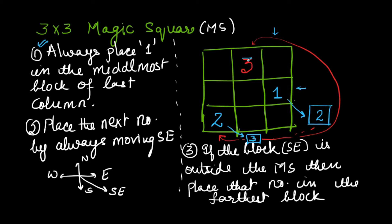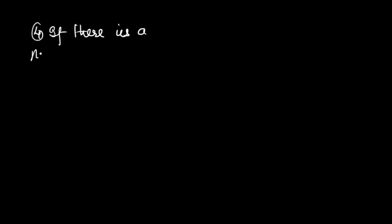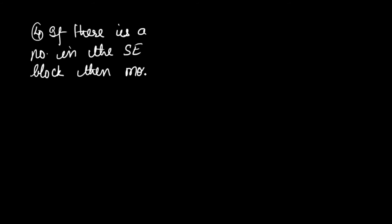We've placed three numbers. Now when we move southeast, we see that the block is already occupied by a number. So comes rule number four: if there is a number in the southeast block, then move west, and then take a southeast step.